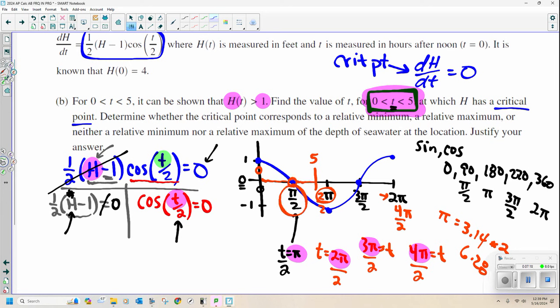It's at pi over 2. That's when my time is pi. So when I have pi in for time over 2, that's when I get my 0. So time has to be pi, which is 3.14. That's a critical point.